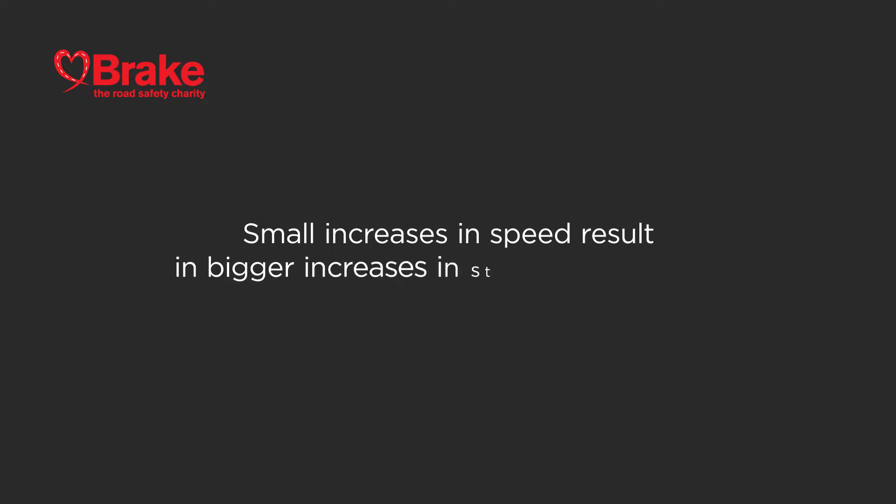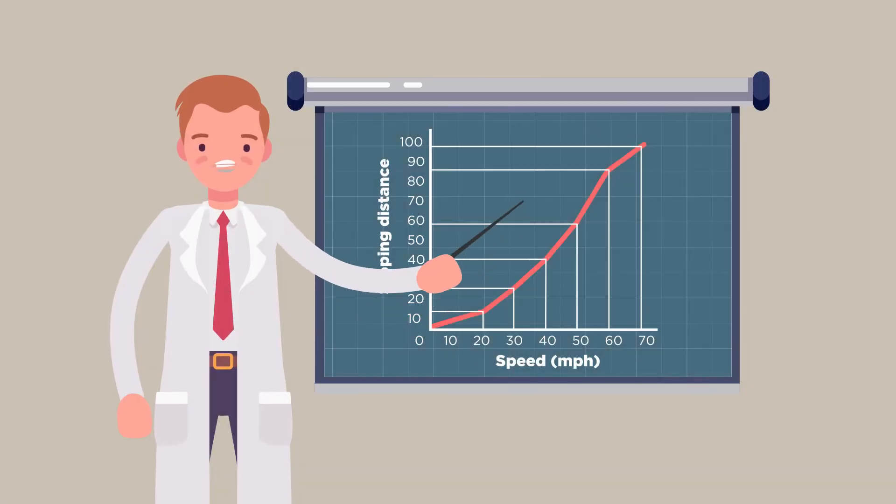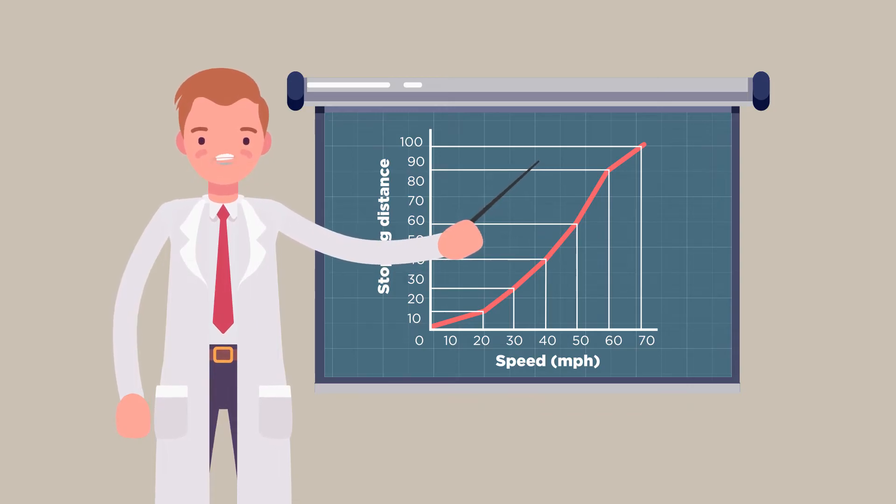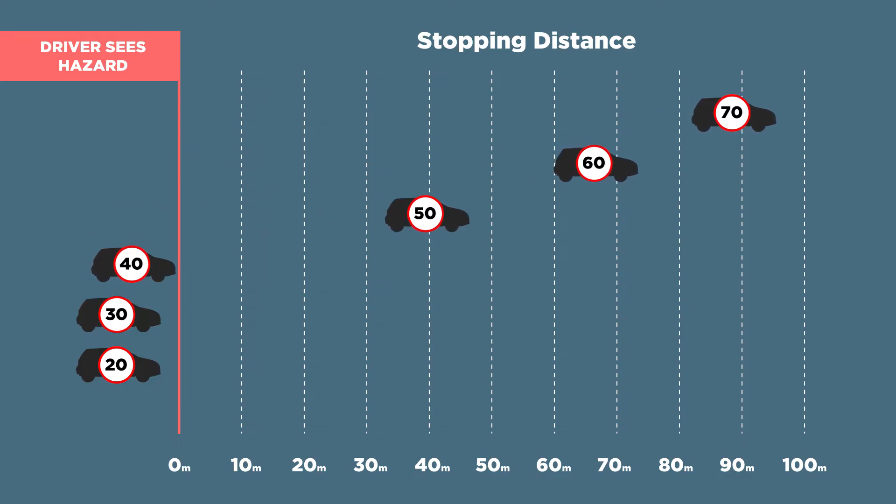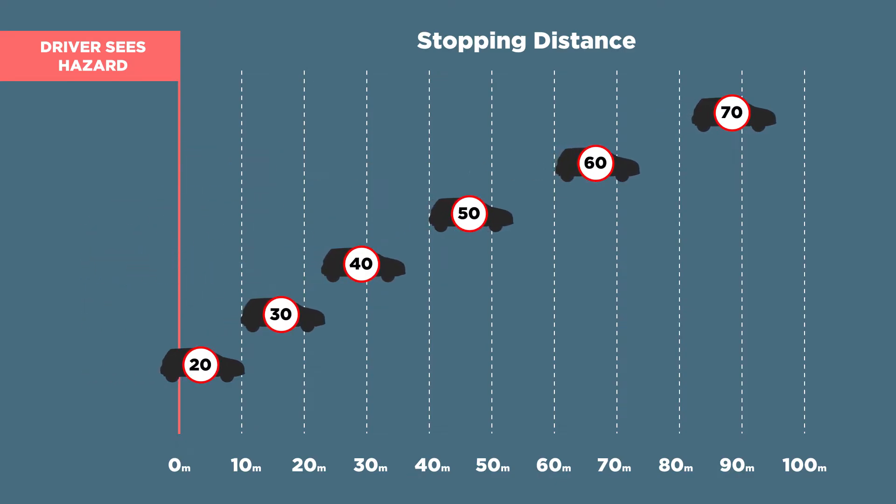Small increases in speed result in bigger increases in stopping distances. At higher speeds, a driver has less time to react to the road ahead of them. A car can travel a long way in the few seconds it takes a driver to think and react to any danger. Slowing down gives the driver more time to avoid the collision.